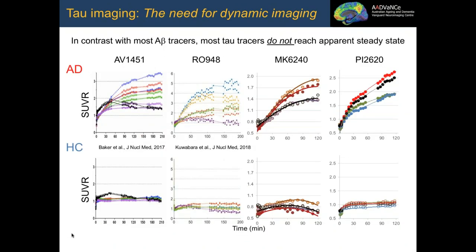A key limitation of second generation tracers is that even with reversible kinetics, they don't reach steady state during acquisition, especially with high target binding. When there is no target, as in controls, this is not problematic. But in high-tau cases, the tendency not to reach steady state complicates quantification—something that will be addressed by the second speaker.